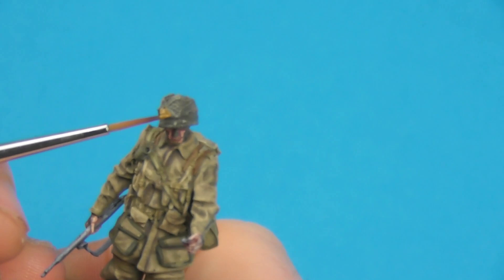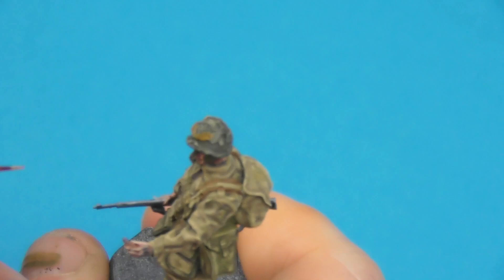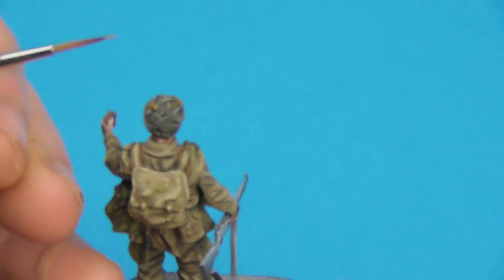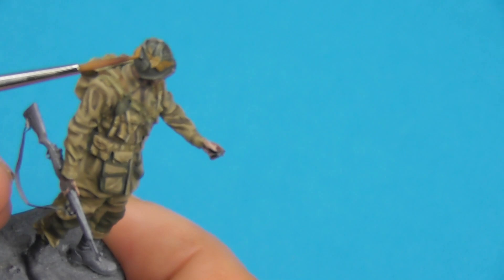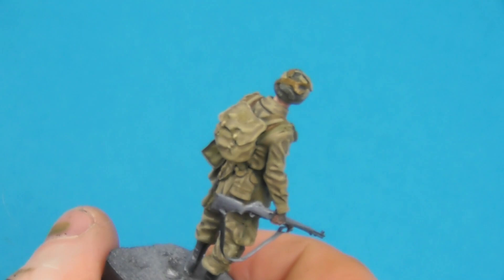Moving on to the Hessian on his helmet, or the camo netting. I'm going to take some Vallejo English uniform that's just been thinned down again with a drop or two of AK Interactive acrylic thinner. And I'm also going to take some Vallejo Camo Beige, and that's just going to be used for some of the other pieces here of Hessian.